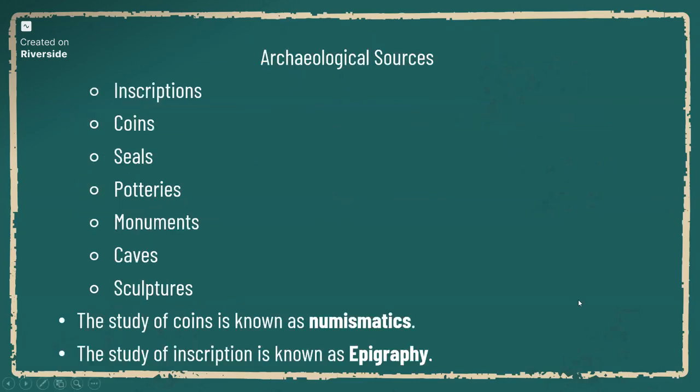Let's look at archaeological sources — things discovered through archaeological excavations. The sources that come under archaeological sources include inscriptions, coins, seals, potteries, monuments, caves, sculptures, etc.